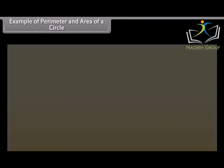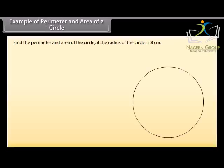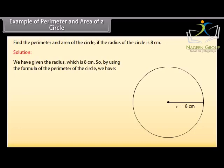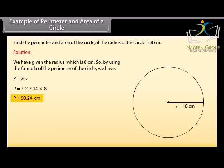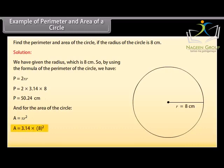Example 2: Find the perimeter and area of a circle if the radius is 8 centimeters. Solution: Using the formula P equals 2 pi r, we get P equals 2 × 3.14 × 8, which equals 50.24 centimeters. For the area, A equals pi r squared equals 3.14 × 8 squared, which equals 200.96 centimeters squared.